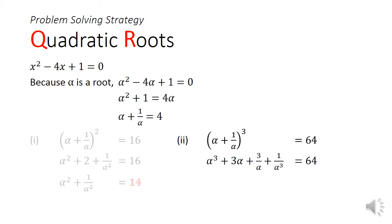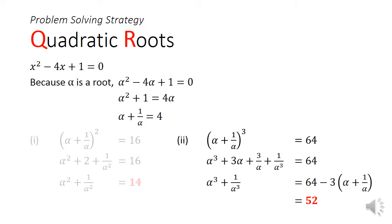Part 2 is very similar to part 1. We cube both sides. On the left side, we will get alpha cubed plus 3 alpha plus 3 over alpha plus 1 over alpha cubed, and on the right-hand side we get 4 cubed, which is 64. Rearranging the terms, we will get alpha cubed plus 1 over alpha cubed to be equal to 64 minus 3 times of alpha plus 1 over alpha, which we have known is 4. So after subtraction, that will give us 52, which is the answer to part 2.